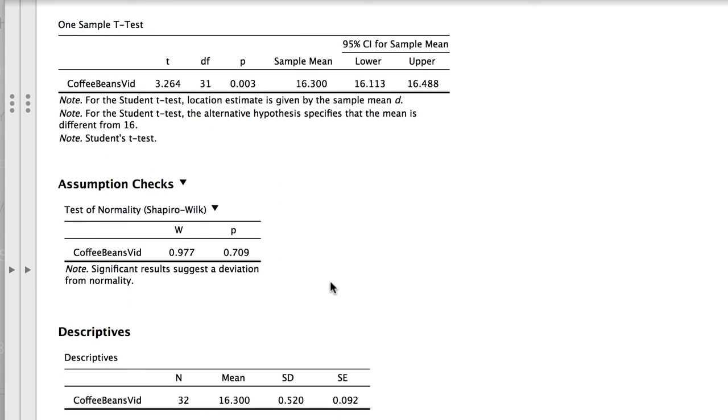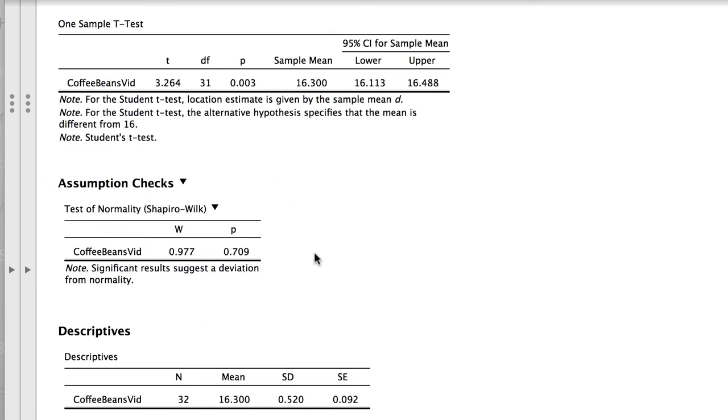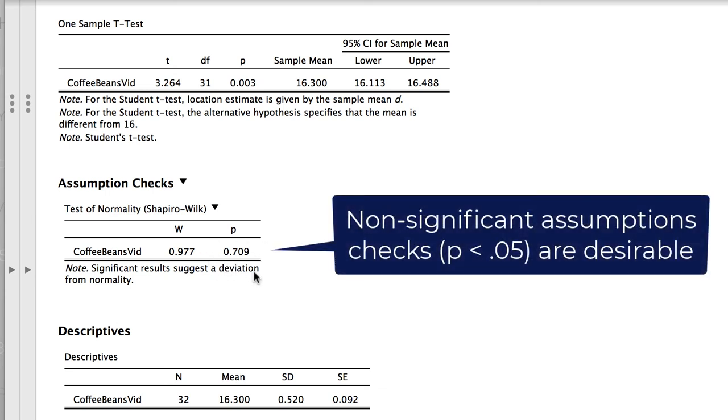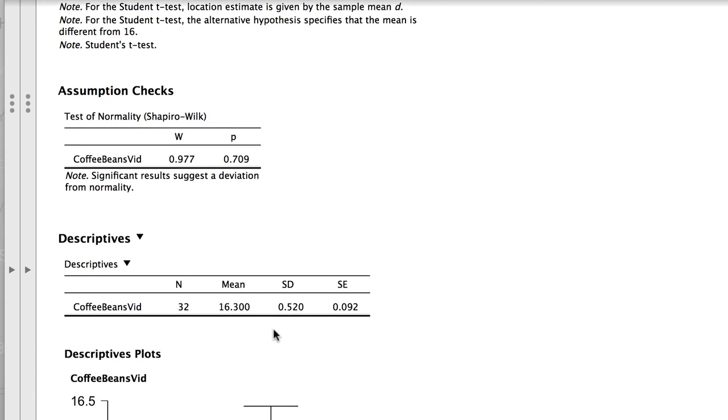Because the 95% confidence interval does not include the hypothesized value of 16, all of these data points are telling us exactly the same thing. Our sample is statistically significantly different from our population. We can also look for the assumptions checks to see whether our data passed the assumption of normality. Being non-significant, we know that the data do pass that assumption. And here are the descriptive statistics that we're going to need for our write-up as we have interpreted the results and are ready to write up our results in APA style.